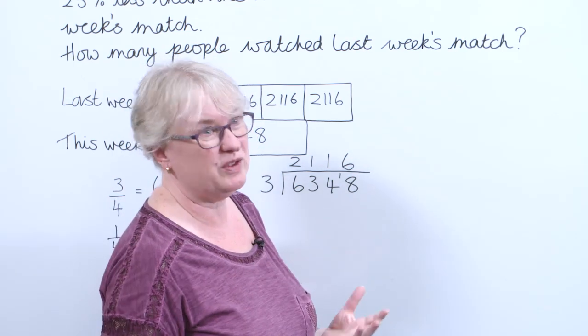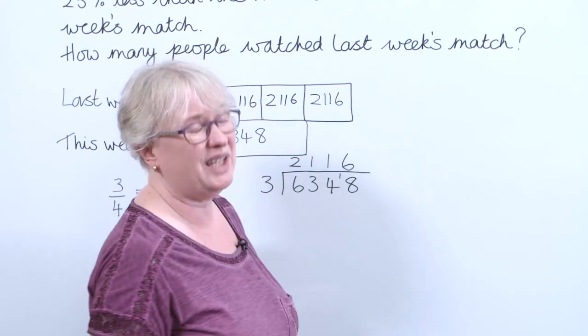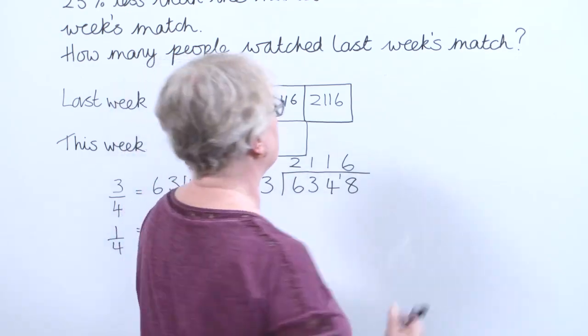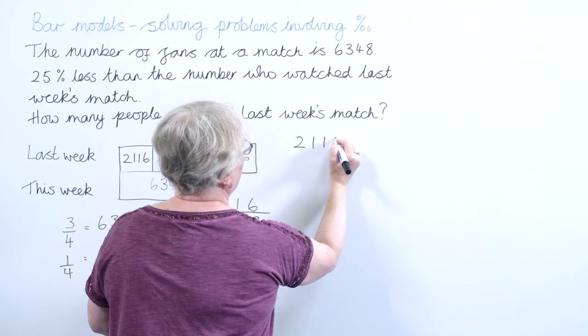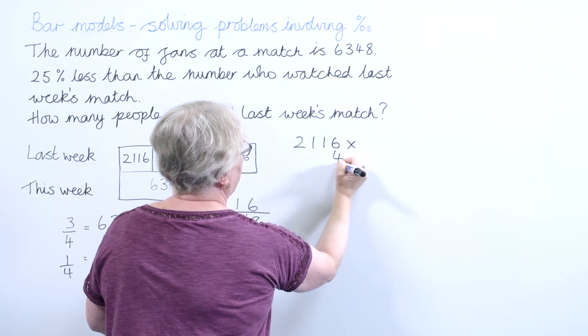I think short multiplication is obviously the quickest method and you want to encourage that during SAT tests. So I've got 2,116 multiplied by 4.